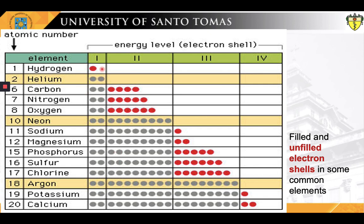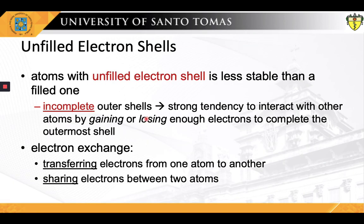All elements commonly found in living organisms have unfilled outermost shells — shown in red — and can thus participate in chemical reactions with other atoms. For comparison, some elements have only filled shells — shown in yellow — and these atoms are chemically unreactive, known as the inert elements. Naturally, atoms with incomplete outer electron shells are less stable, and have a strong tendency to interact with other atoms to either gain or lose enough electrons to achieve a completed outermost shell.